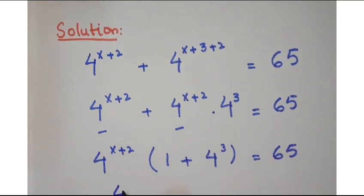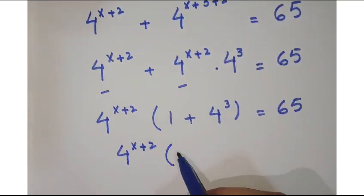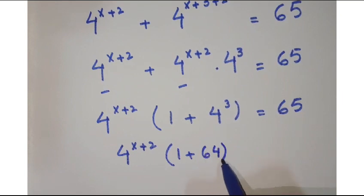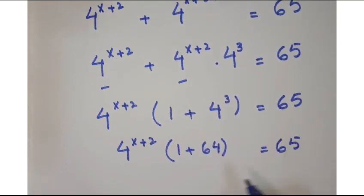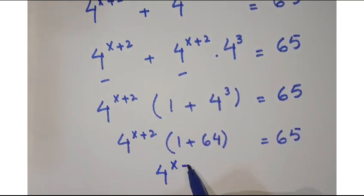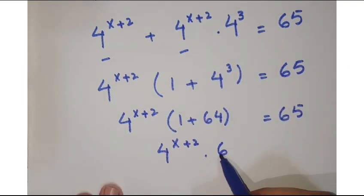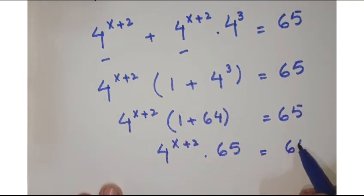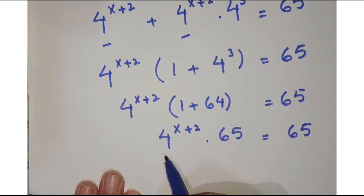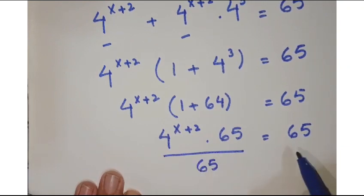So you have 4 to the power x plus 2 into 1 plus 64 equals 65. Now 4 to the power x plus 2 into 65 equals 65. Now dividing by 65 on both sides.